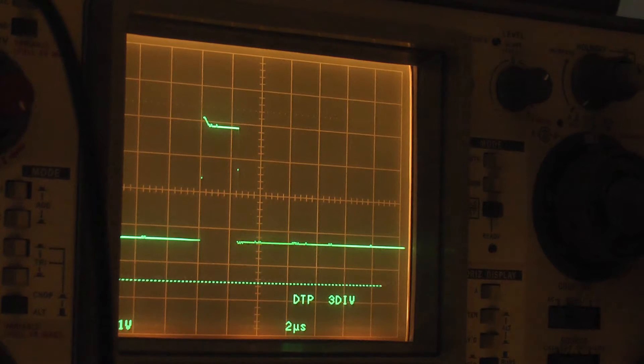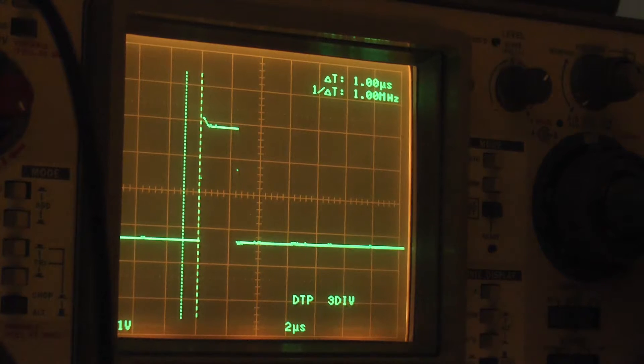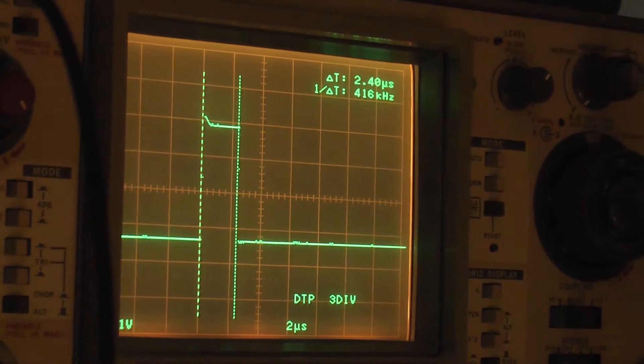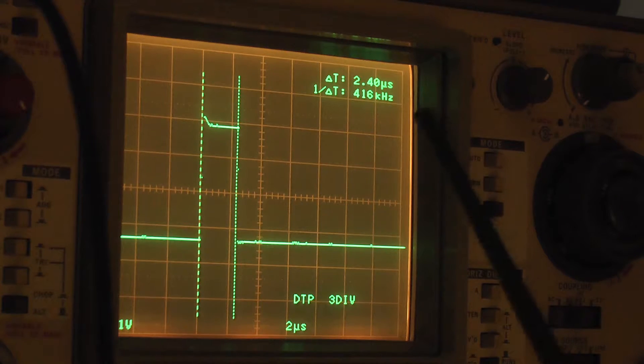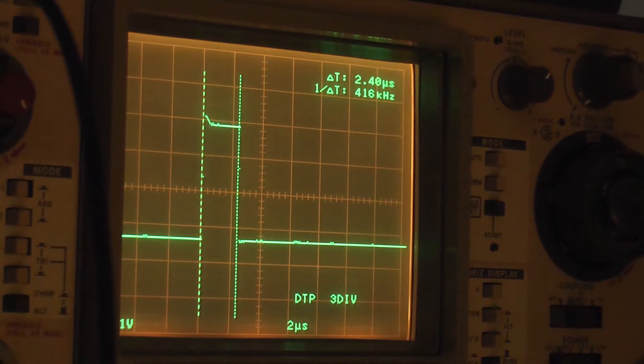And now we can use the cursor to find out just how long the pulse is. And we see here, we've got a 2.4 microsecond pulse. This thing is positively tiny.